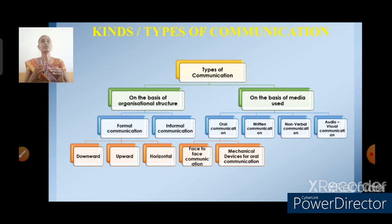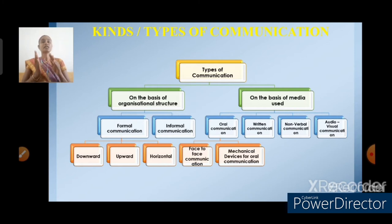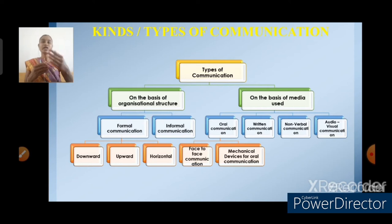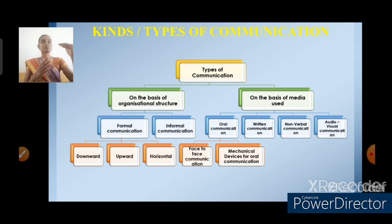The second type is written communication — communication in a written format, such as memos, notices, telegrams, reports, etc. Then nonverbal communication — nonverbal communication means communication not in a verbal form; it may be unwritten or unspoken. For example, smiling, body movement, physical appearance, and voice. Then audio-visual communication — communication that is both seen and heard. For example, watching TV, watching movies, and watching news are audio-visual communications.